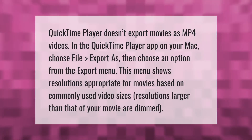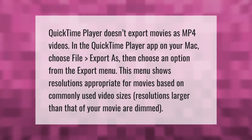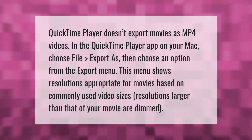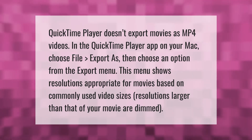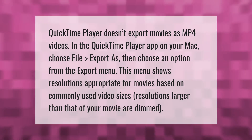QuickTime Player doesn't export movies as MP4 videos by default. In the QuickTime Player app on your Mac, choose File, then Export As, and choose an option from the Export menu. This menu shows resolutions appropriate for movies based on commonly used video sizes; resolutions larger than your movie are dimmed.